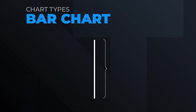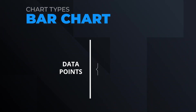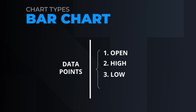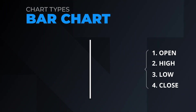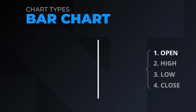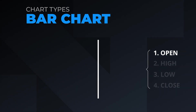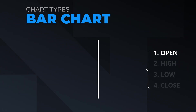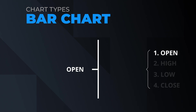The bar comprises four data points: the open, high, low, and close of that interval. The open is the first recorded price during the time interval selected. For instance, on a daily chart, the open is the first trade or print of the day. This is indicated by a horizontal hash mark to the left of the vertical bar.